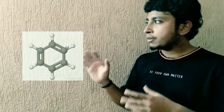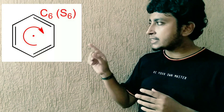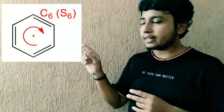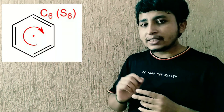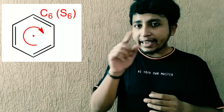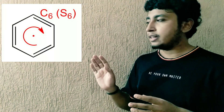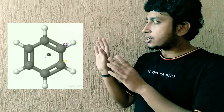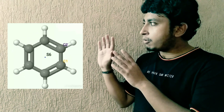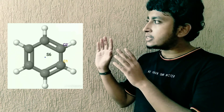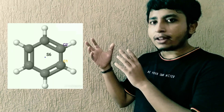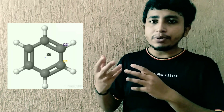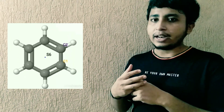Now we will look at another symmetry element — the C6 axis. This C6 axis runs through the middle of the ring, and this C6 axis is actually an S6 axis as well. In the 3D model, you can see the benzene ring can rotate along this axis to give the same ring as a result.